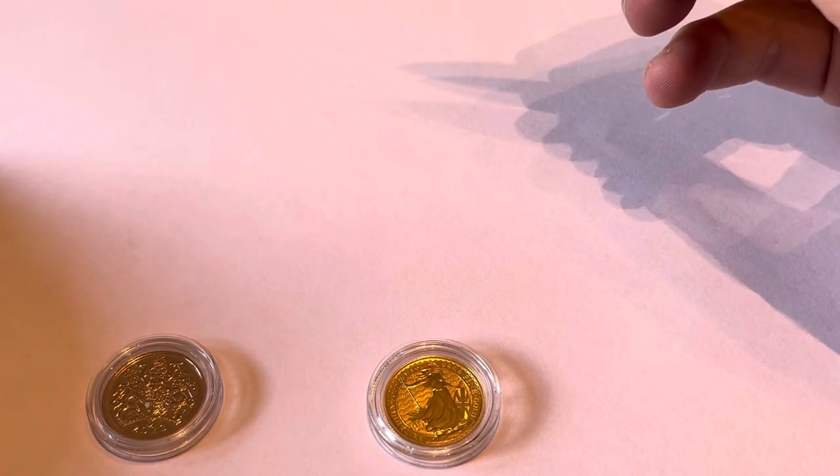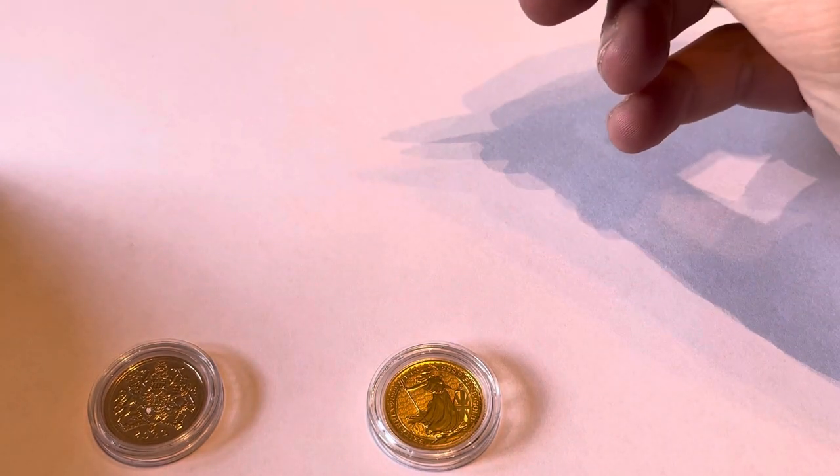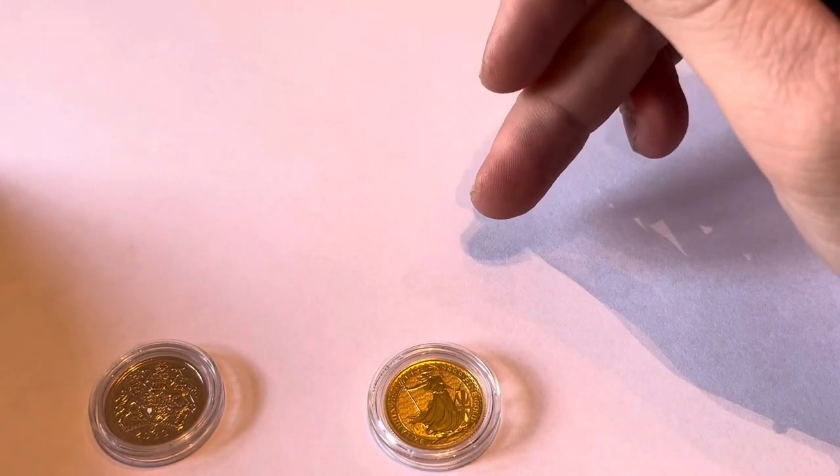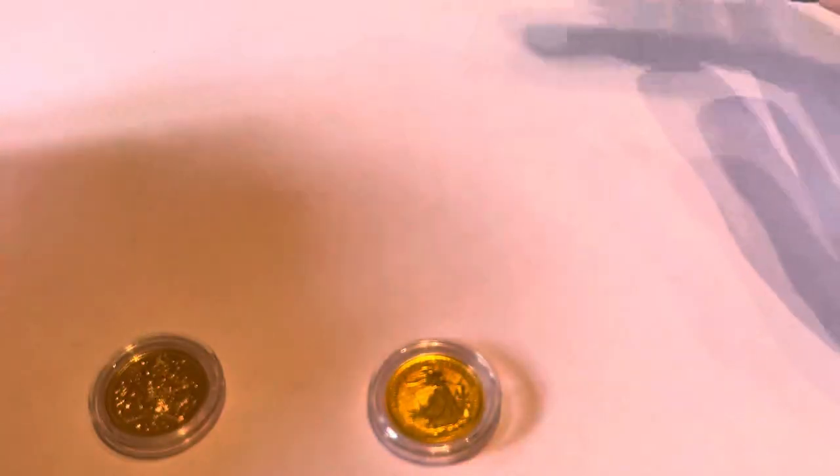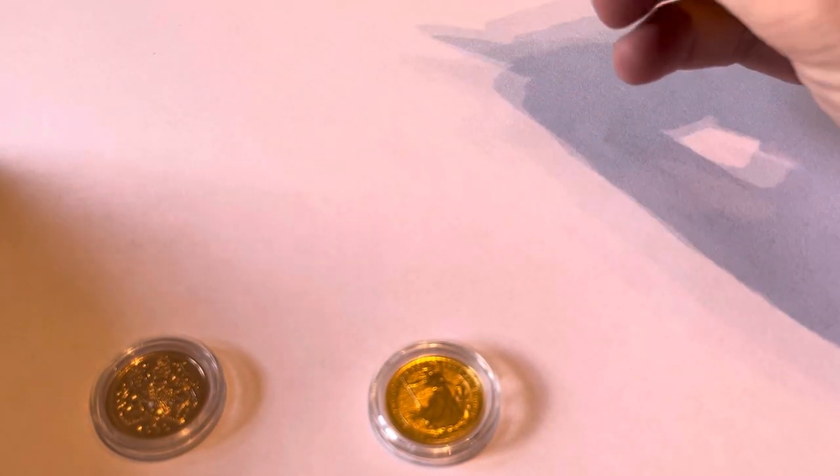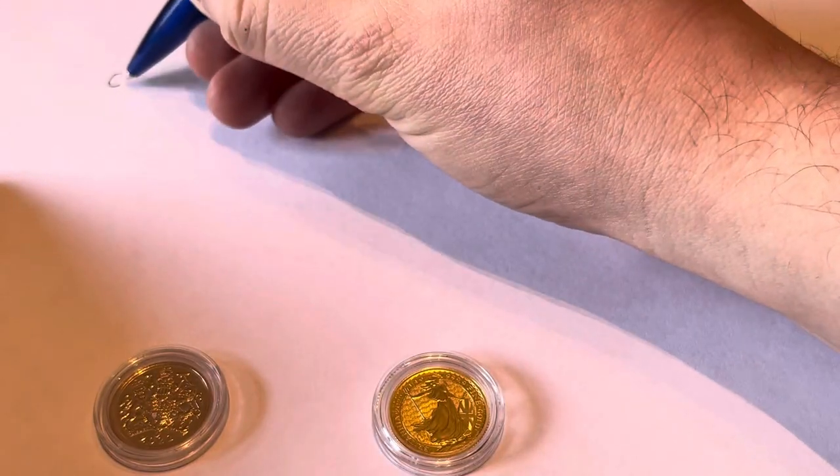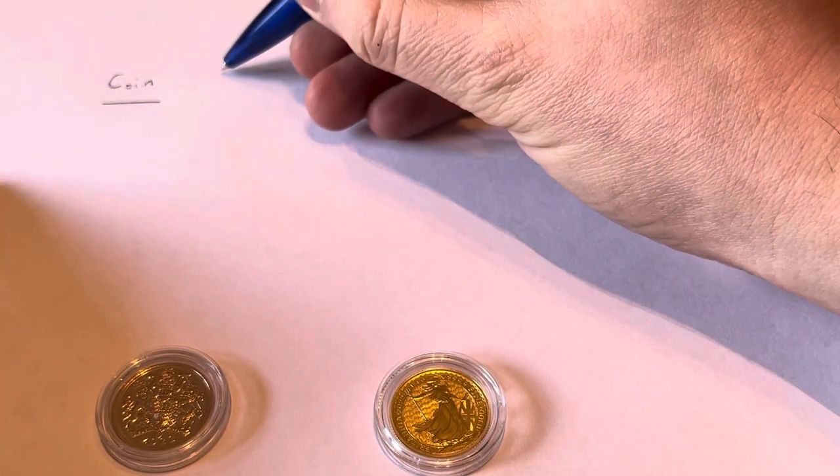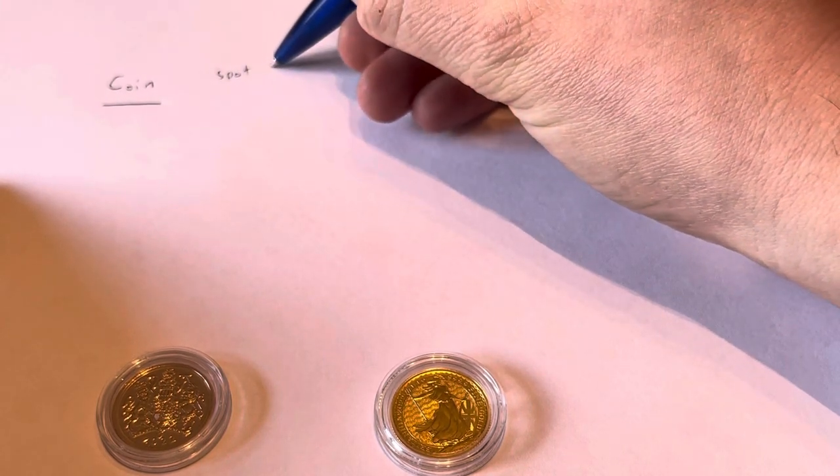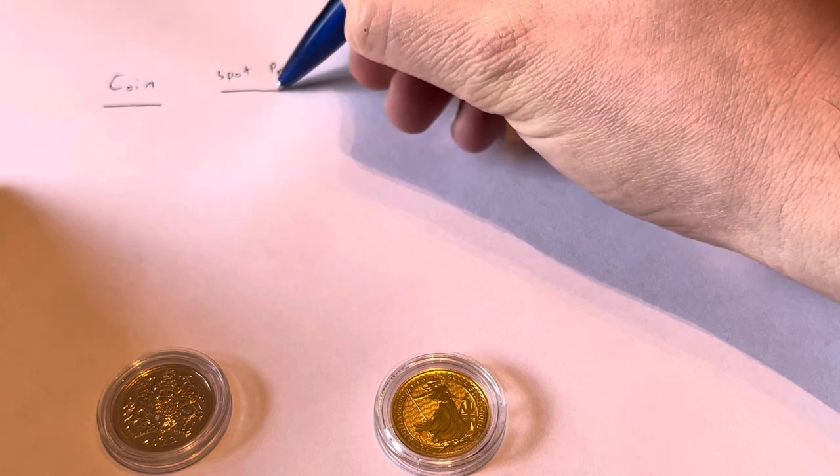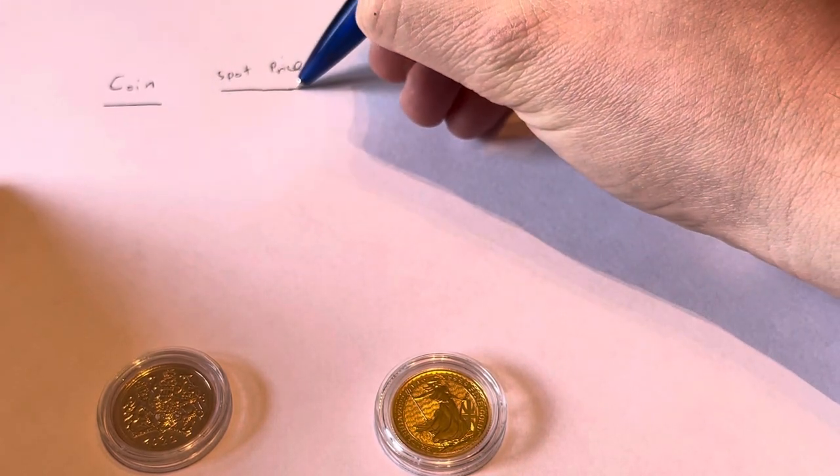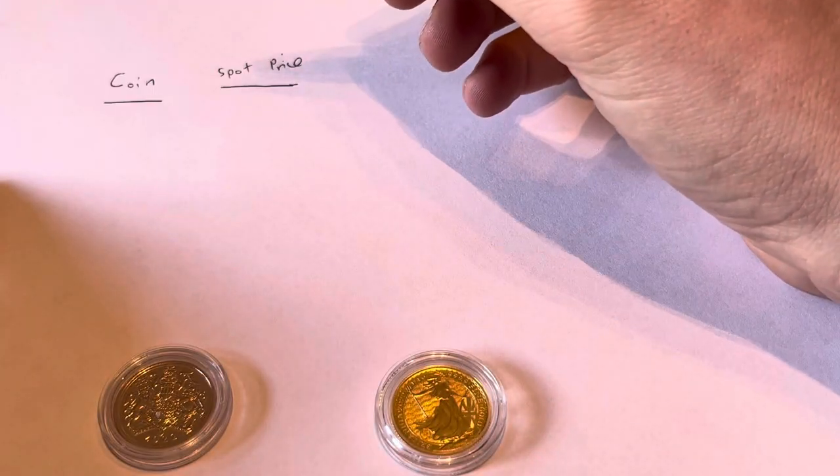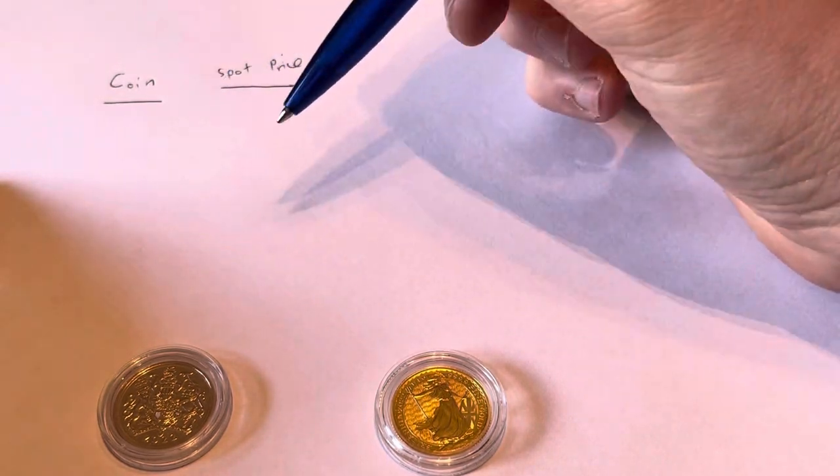To kind of demonstrate the points, I'm going to draw a bit of a table here to really compare and contrast, particularly the amount of premium that you're going to be paying on a sovereign and on a Britannia and just sort of looking at what might be the best value for money. So in order to do that, I'm just going to draw this table. We'll start off with a column for coin, and then we'll do a column for spot price. Excuse my writing, hopefully it gets the message over.